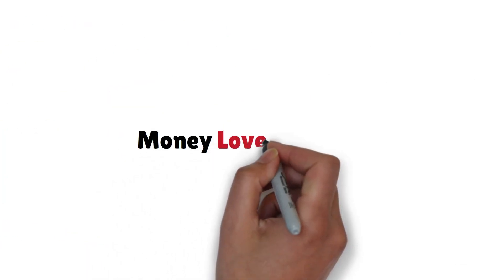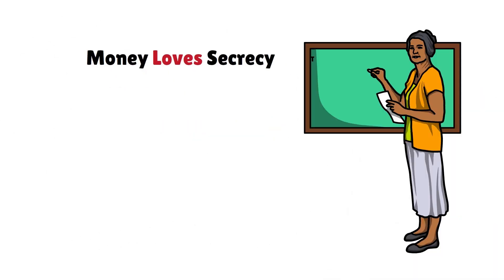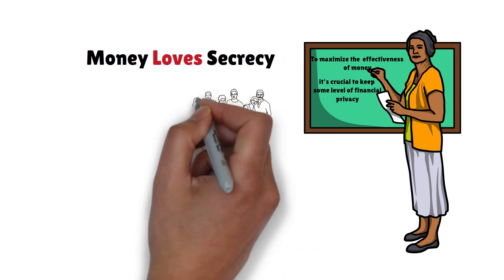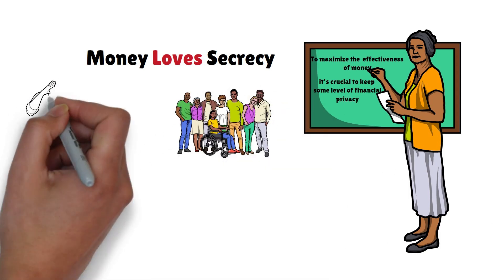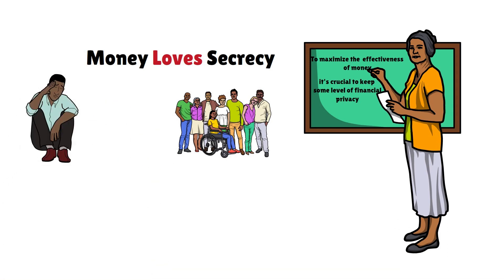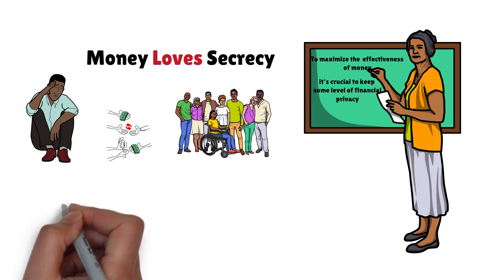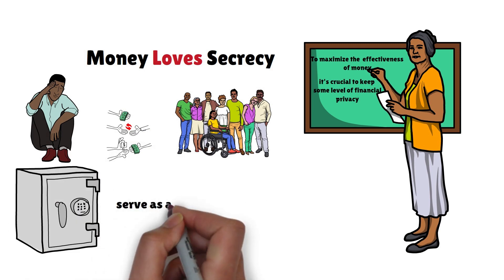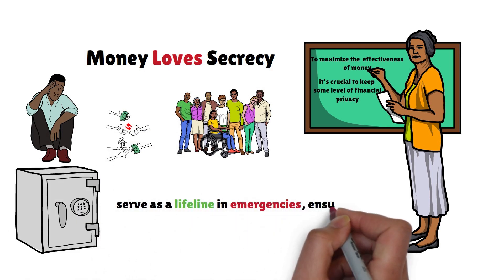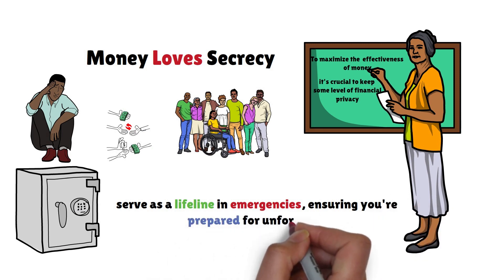Rule 7: Money loves secrecy. To maximize the effectiveness of money, it's crucial to keep some level of financial privacy. While it's essential to help loved ones in times of need, being too open about your finances can strain relationships with constant requests for money. However, having a secret account can serve as a lifeline in emergencies, ensuring you're prepared for unforeseen circumstances.